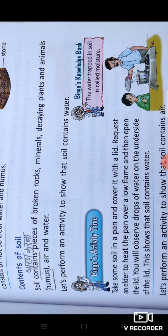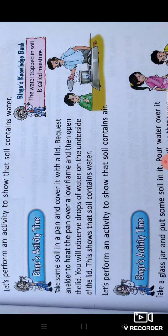Bingo's Activity Time. Take soil in a pan and cover it with a lid. Request an elder to heat the pan over a low flame and then open the lid. You will observe drops of water on the underside of the lid. This shows that soil contains water.